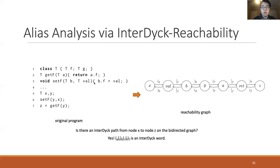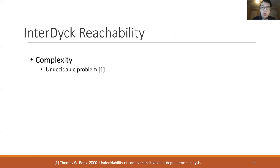Now we come back to our original problem: is there an interdyke path between node x and node z? Yes — the edge labels of the path between them form an interdyke word. Thus, interdyke reachability on bi-directed graphs provides the solution for alias analysis: variable x and variable z can be aliases of each other. For the general interdyke reachability problem, its complexity is well known to be undecidable. Here we focus on its bi-directed variant.